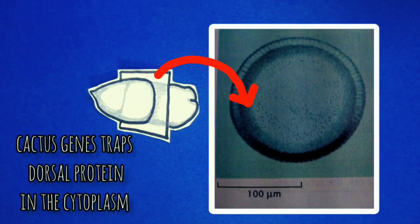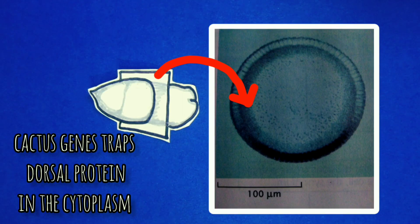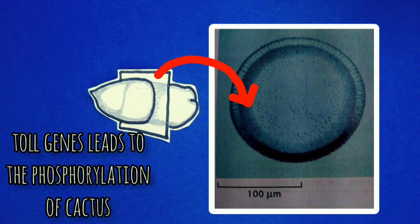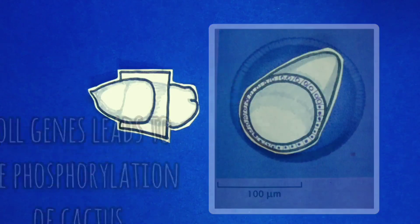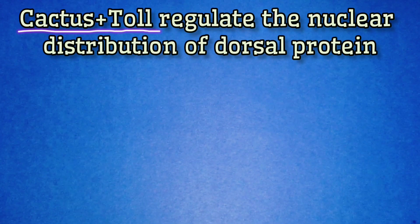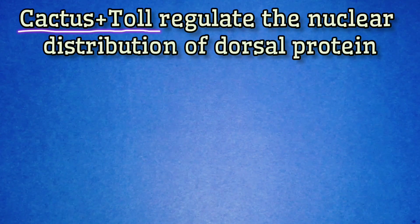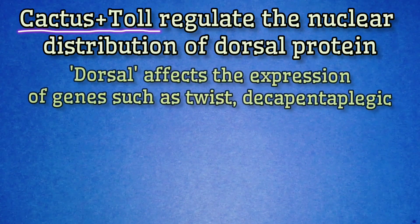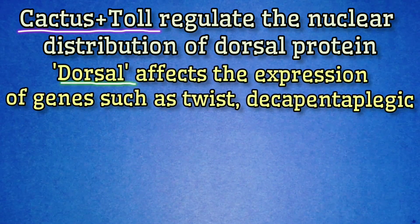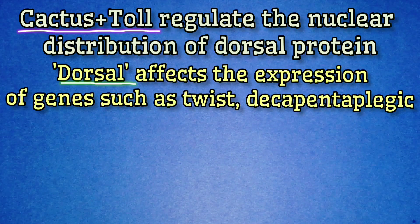At this point there is a smooth gradient of increasing nuclear dorsal concentration from the dorsal to the ventral side. The nuclear uptake of dorsal protein is governed by a protein called Cactus, which binds to the dorsal protein and traps it in the cytoplasm. The presence of another protein called Toll leads to the phosphorylation of Cactus, causing it to be degraded. When Cactus is degraded, dorsal is released and can move into the nucleus. Together, Cactus and Toll regulate the nuclear distribution of dorsal protein, which determines the dorsal-ventral axis of the embryo.